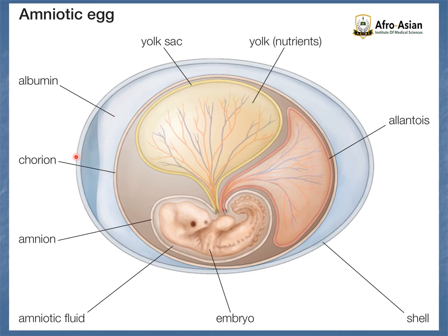We have the lumen here, this is the chorionic membrane, the amnion with amniotic fluid, the chorionic fluid, then the embryo, and outside is the shell. The yolk sac surrounds the embryo and it looks like a small white circle. The yolk sac nourishes the embryo and also helps produce blood cells.